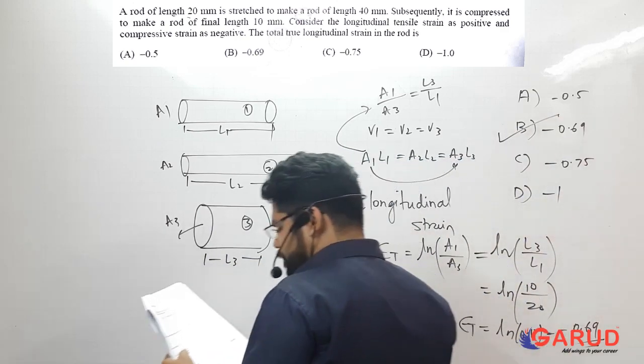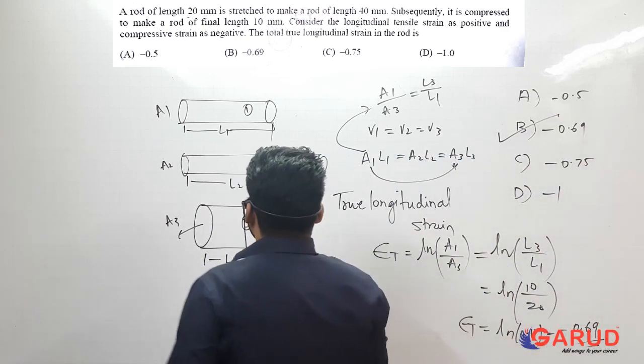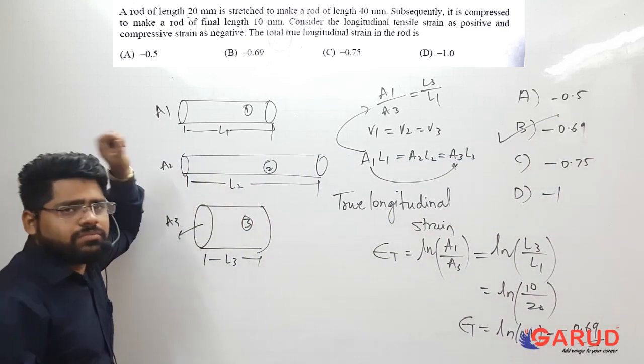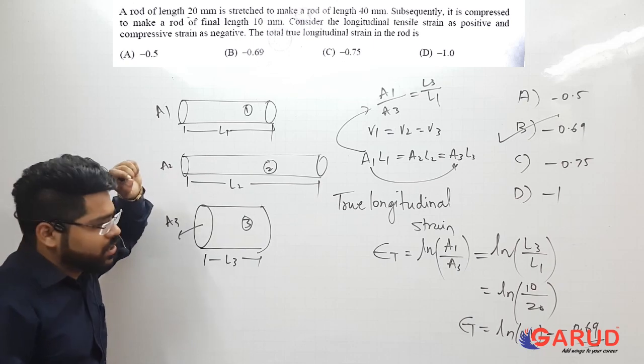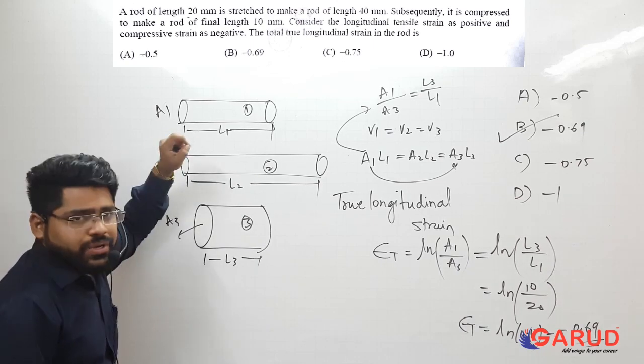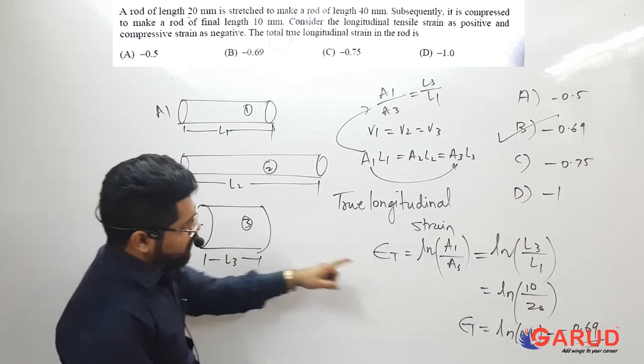Very simple sum. Whenever you deal with true longitudinal strain problems, remember the formula εT = ln(L3/L1) and the concept that volume remains constant during the deformation process.